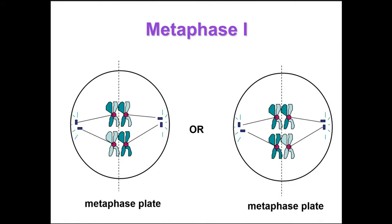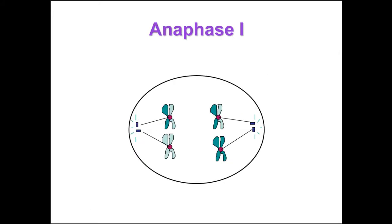This is called independent assortment — when they can line up randomly at the metaphase plate. Then in anaphase one, pairs of homologous chromosomes separate. One chromosome moves toward each pole guided by the spindle apparatus. Sister chromatids remain attached at the centromere and move as one unit toward the pole. Now we've separated the homologous pairs that have genetically recombined, however we still have chromatids attached at this point.